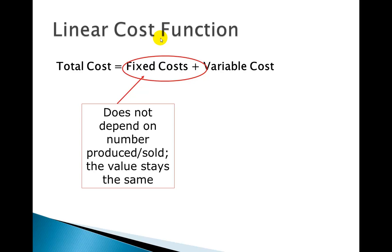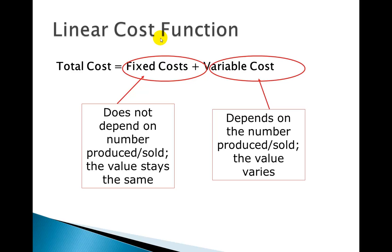So fixed cost does not depend on the number produced or sold. That value is going to stay the same. Variable cost depends on the number produced or sold. The value varies. That's why I call it variable. And so a nice shortened version of this formula is TC equals FC plus VC. FC for fixed cost, VC for variable cost.